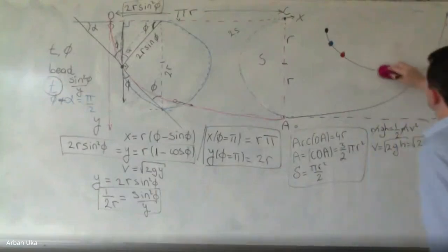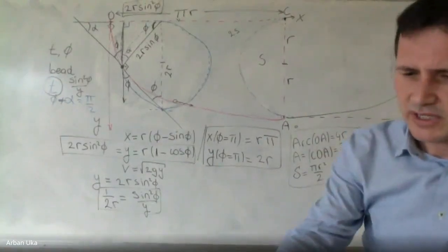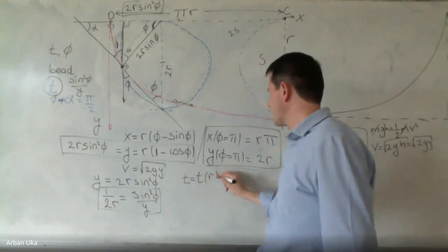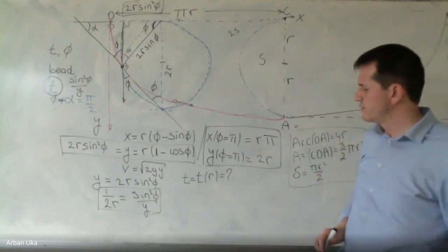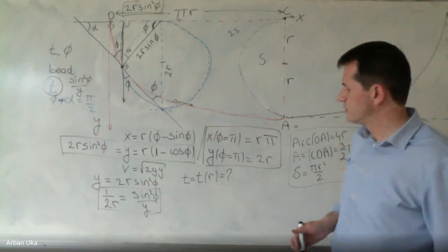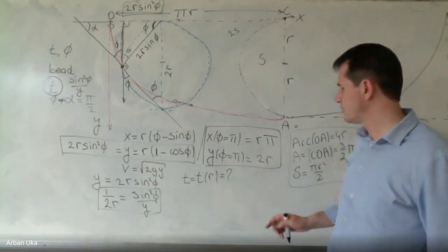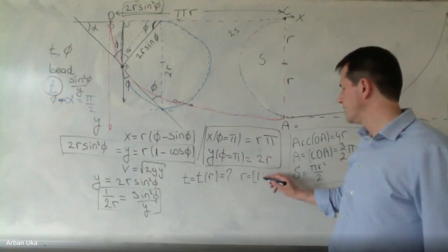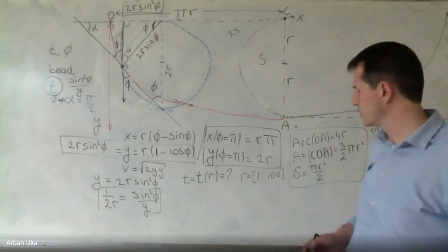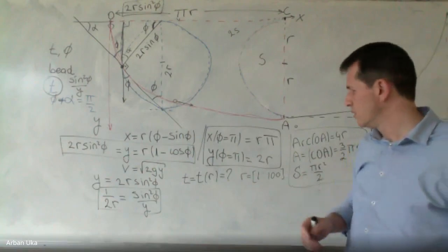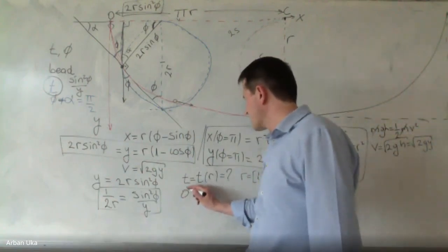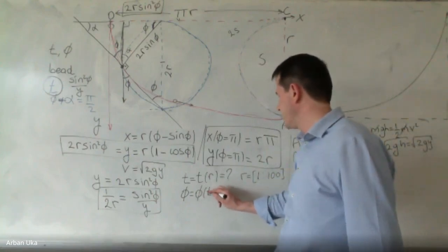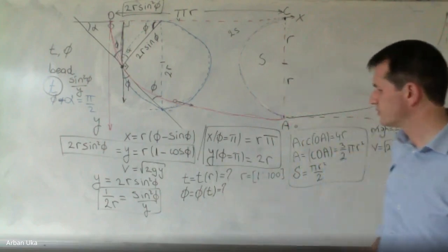The homework asks the following. First, find the time t as a function of radius r. This means solving the problem for a series of different values of r — for example, from 1 centimeter up to 100 centimeters — and see what the curve looks like. Choose a range over which you can observe a change. Then, the next task is to find φ as a function of time: how does this angle φ change as a function of time?